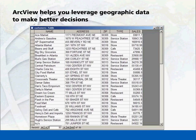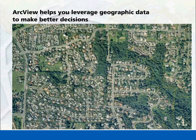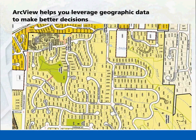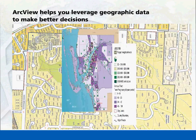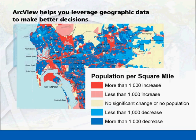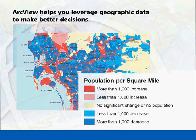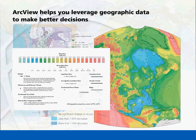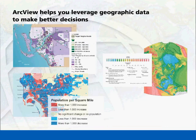Most data has a geographical component that can be tied to a place, such as an address, postal code, global positioning system location, census block, or city. ArcView allows you to reveal trends and relationships not readily apparent in databases, spreadsheets, or statistical packages.